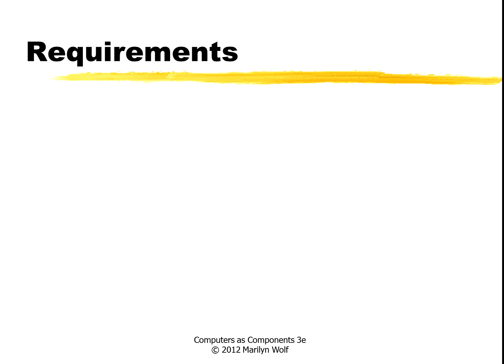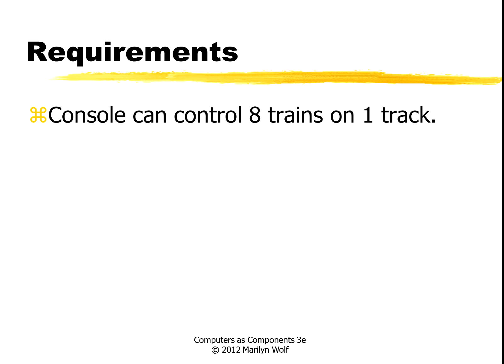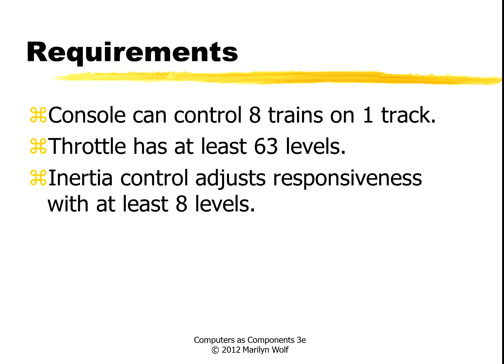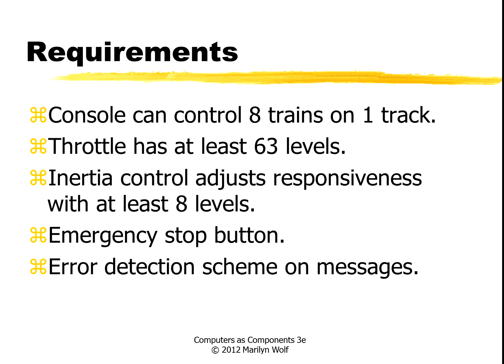So let's look at the requirements. We want to be able to control eight trains on a single track. That tells us the minimum number of bits we need for an address for each train. We want to have a throttle control that has at least 63 different levels, so that's pretty fine grain control of the throttle of each train. We want to have an inertia control that has eight levels of response. The inertia control helps us model the ability of the train to accelerate and decelerate — a heavier train is going to take longer to accelerate and decelerate. We want an emergency stop button that will immediately stop all the trains, and we want an error detection scheme on the messages.